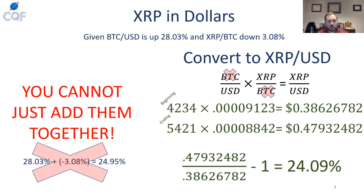The beginning value is $4,234 times the beginning Satoshis of 91.23, which is about 38.6 cents. The ending, calculated the same way, is 47 to 48 cents. Then doing ending divided by beginning minus one gives the Ripple return of 24.09% in terms of dollars. All this is on the Google spreadsheet — you can see all the math, change numbers around, and it's very important that you understand and can calculate this.